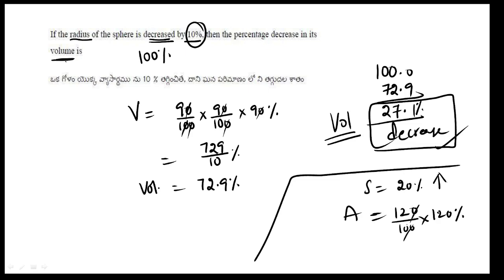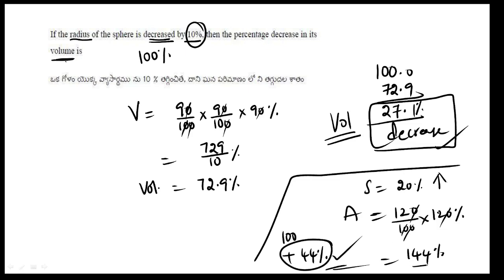Cancel the zeros: 12 × 12 = 144. So the increase in area is 44 percent. The increase or decrease in area is 44 percent — the process is the same.